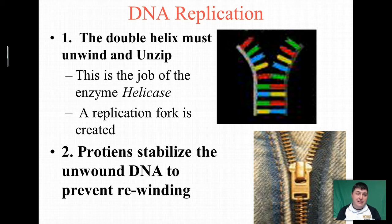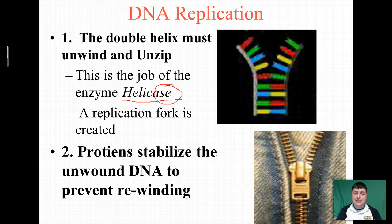The first step of DNA replication is unzipping and unwinding the DNA helix. This is done by an enzyme by the name of helicase. We know it's an enzyme because it ends in -ase, and it's named for what it does — unzipping the helix.